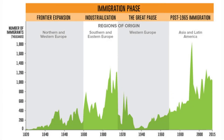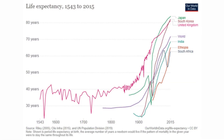Immigration has offset the reduced birth rate to some extent. This chart shows us the phases of immigration over the years. In recent years, immigration has been on the order of 1 million per year. Increased life expectancy has also offset the decline in the birth rate. This chart shows how life expectancy has increased dramatically throughout the world in the last century.